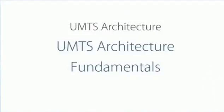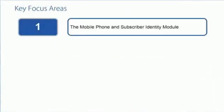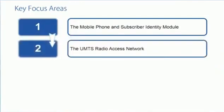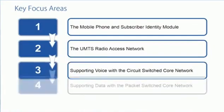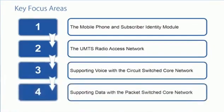In this video, we're going to introduce the UMTS architecture. We're going to start by discussing the mobile and the subscriber identity module. We're then going to look at the UMTS radio access network. We'll move on into the core network, specifically looking at how we support voice in the circuit switch core and how we support data in the packet switch core.